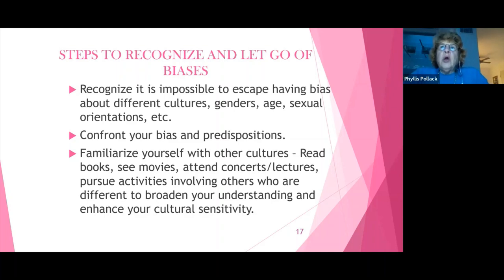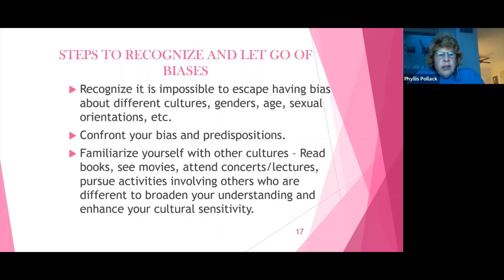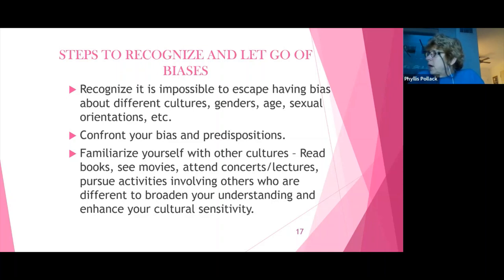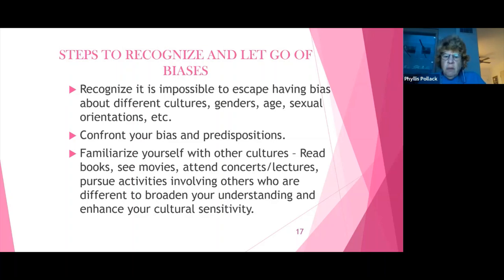The California legislature also passed a civil code section regarding damages, which prohibits the calculation of past, present, and future lost earnings or impaired earning capacity based on race and gender. The California legislature has also imposed on physicians, surgeons, and nurses' assistants requirements to take implicit bias training and how their implicit bias impacts their judgment in terms of medical treatment.